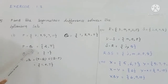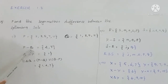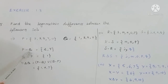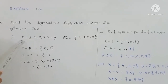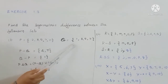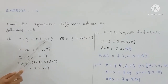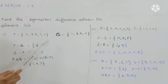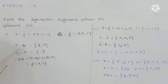First, P minus Q: elements in P not in Q. Checking each element — 2 is not in Q, 3 and 5 are in Q, 7 is not in Q, 11 is not in Q. Next, Q minus P: elements in Q not in P, giving {1, 3, 5, 11}.